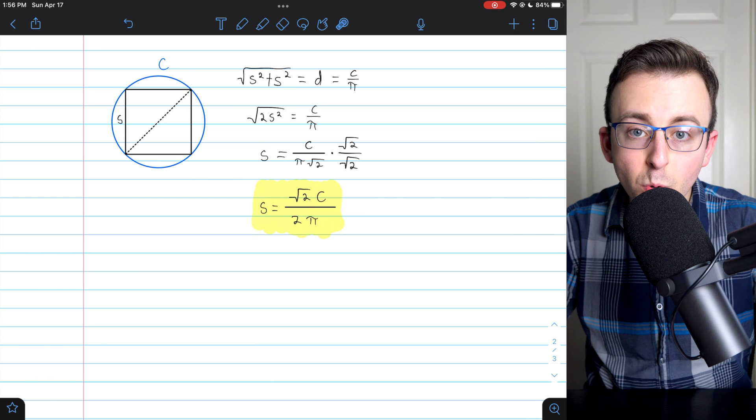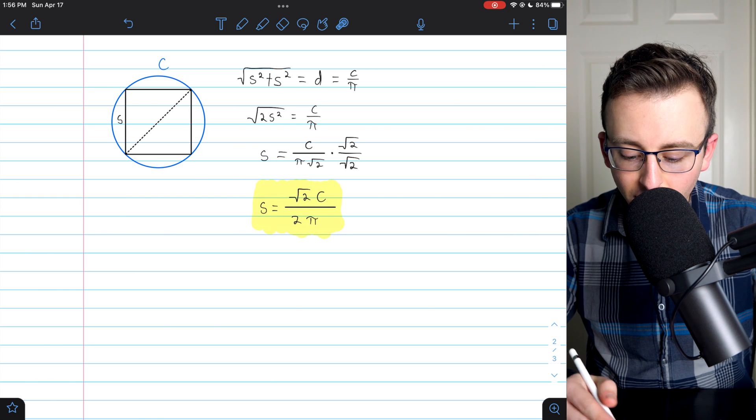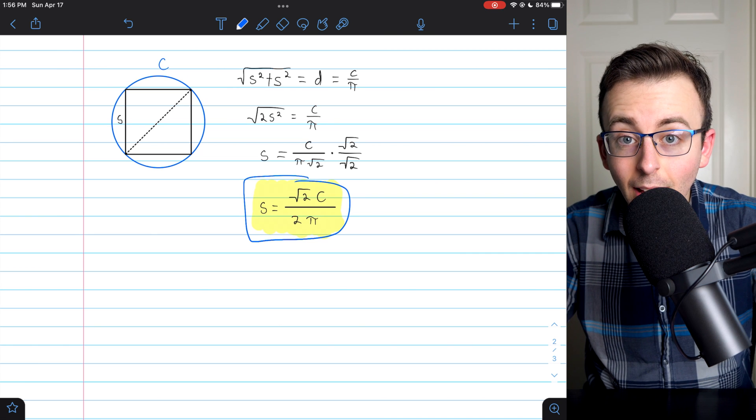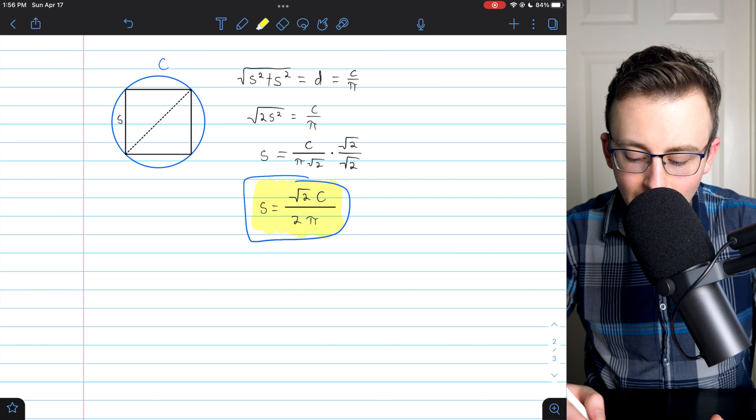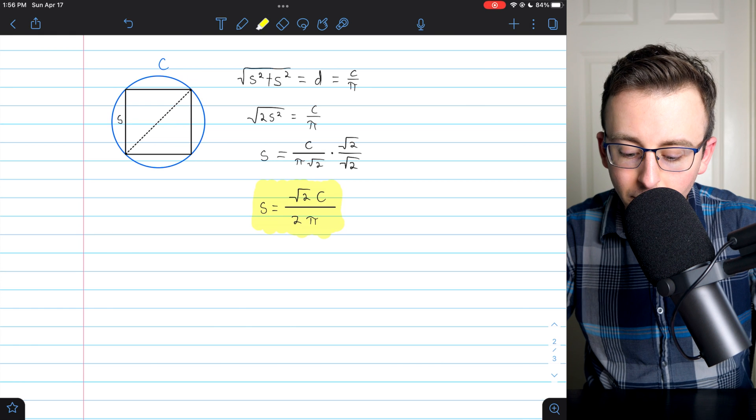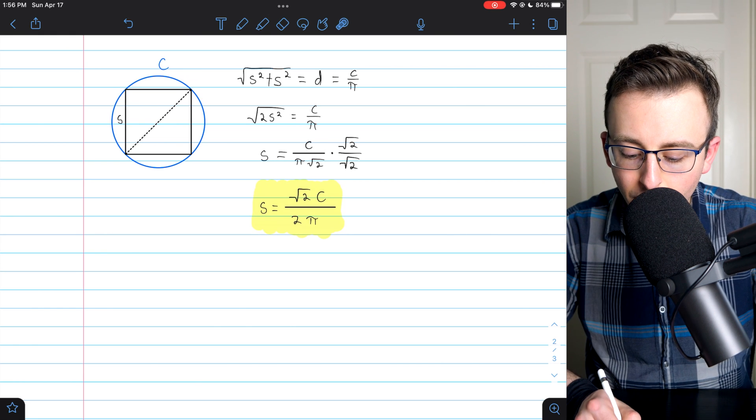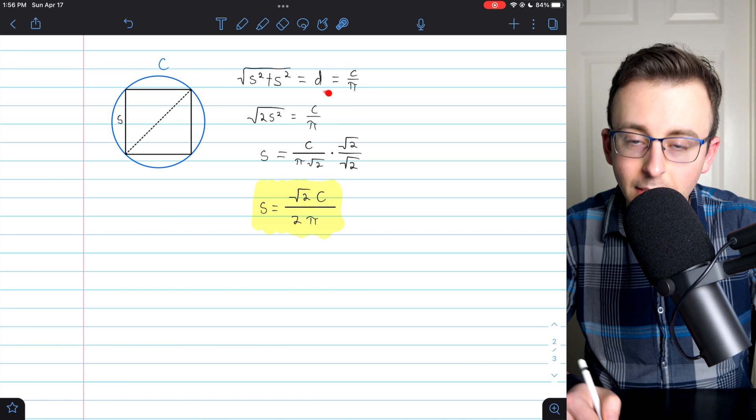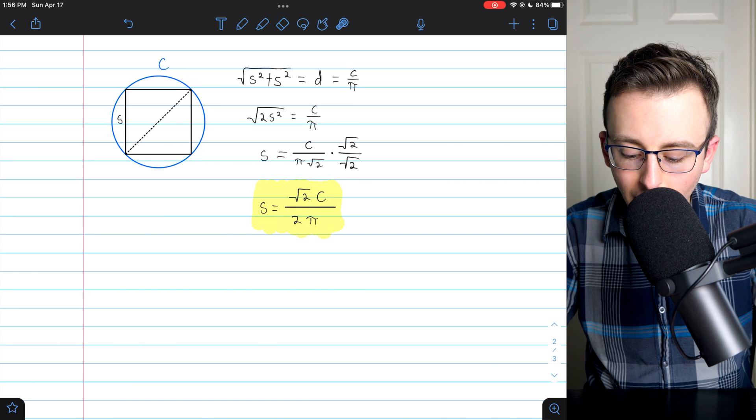And here I've gone through that same work again, but just using symbols. So we have a general formula for the side length of an inscribed square, given the circumference c of the circle. I started off by setting the diagonal equal to the diameter, and the diameter is circumference divided by pi,